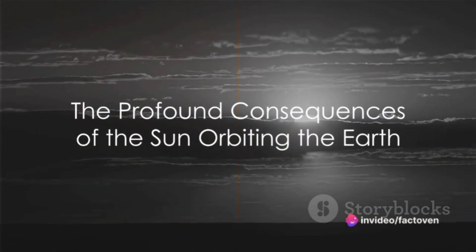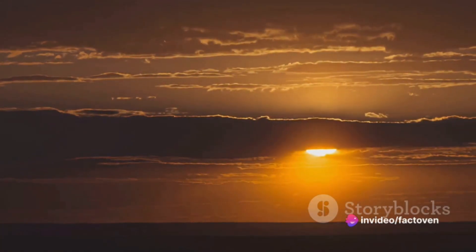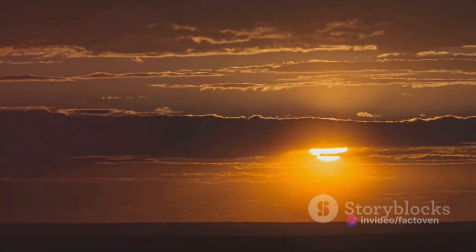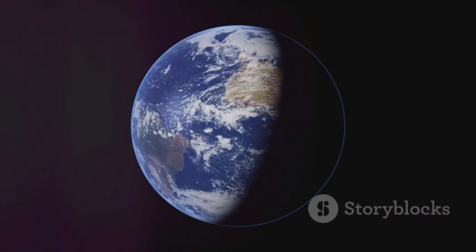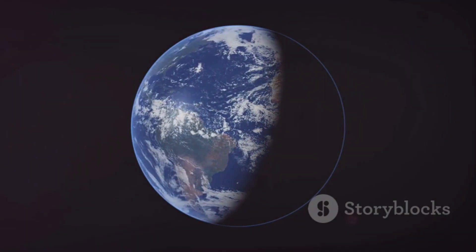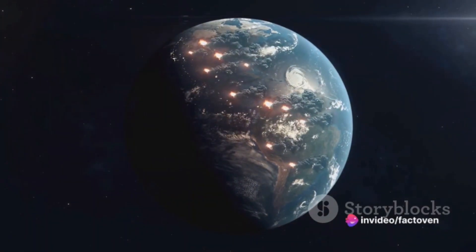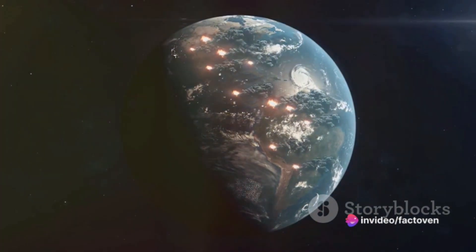But what if this fundamental understanding was turned on its head? What if the Sun orbited the Earth? The consequences would be profound and far-reaching. Firstly, Earth's orbit would be drastically altered, leading to erratic changes in our climate and seasons. The predictability of seasons and the maintenance of a habitable climate, which we take for granted, would be severely disrupted.